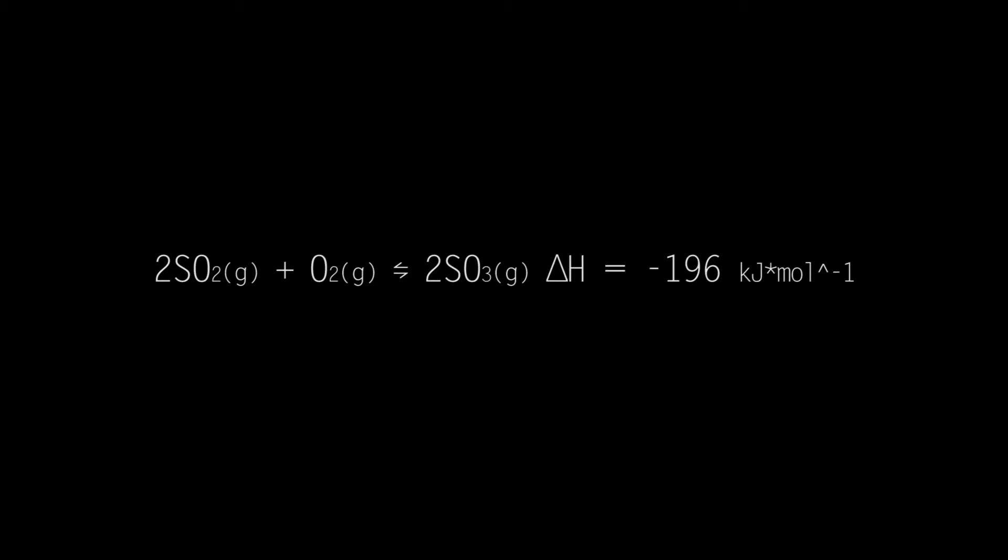This is because reducing the temperature will reduce the rate of the reaction, so manufacturers have found that the compromised temperature of around 400 to 450 degrees Celsius produces a fairly high proportion of sulfur trioxide in a relatively short amount of time.